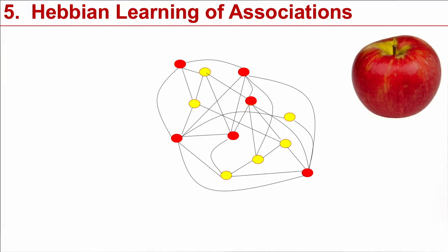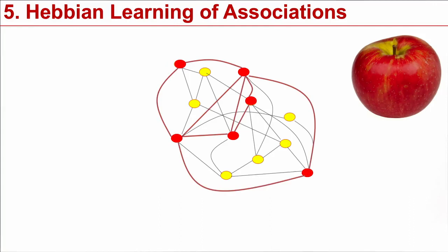And now suppose we have this rule of Hebb. So now we have active neurons, the red neurons, and these neurons, because they are active, they fire together, and that means they make stronger connections. The connections are now stronger. And this is what makes me say this item, this concept of an apple, is now memorized.